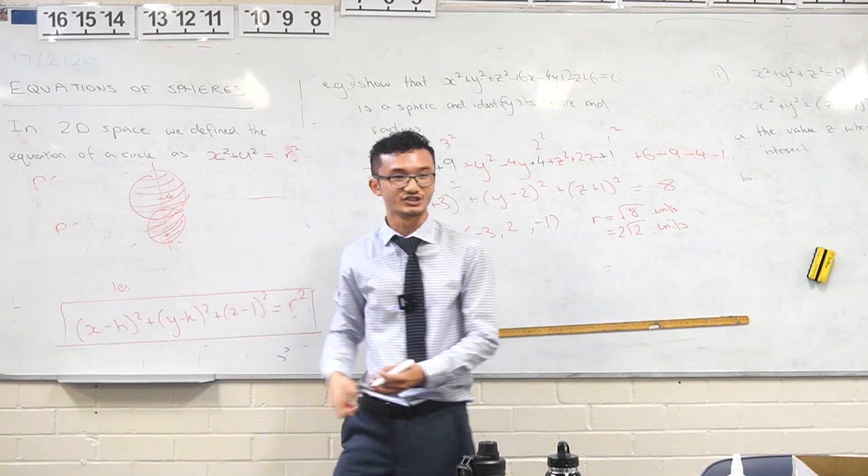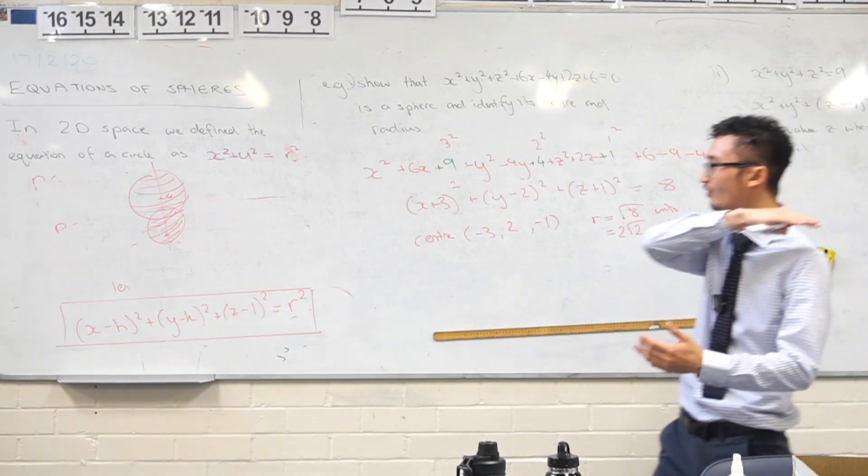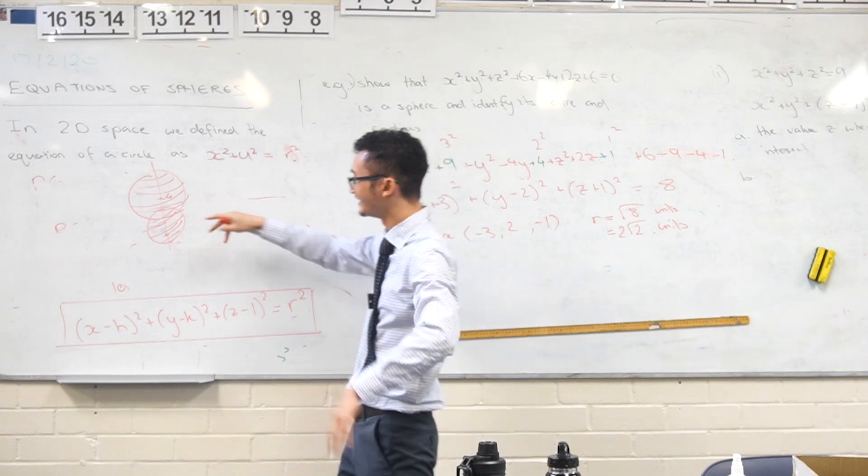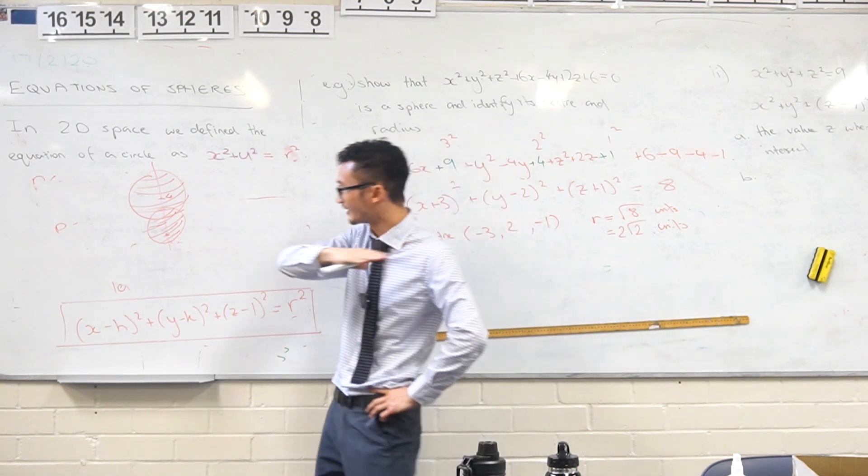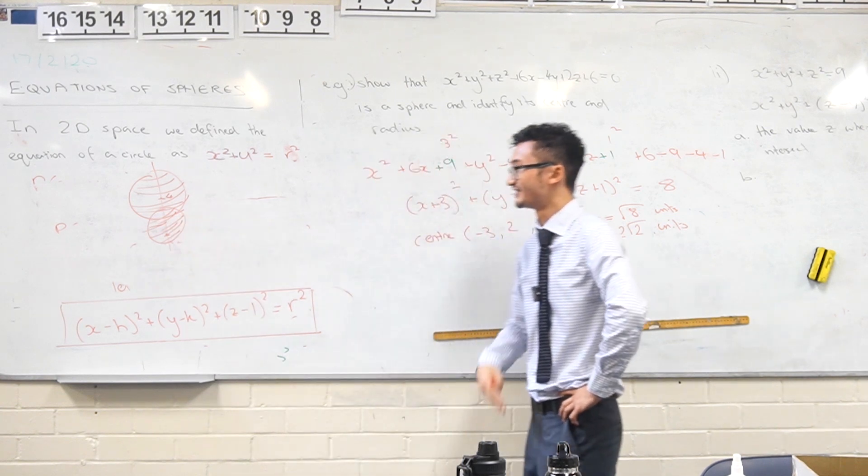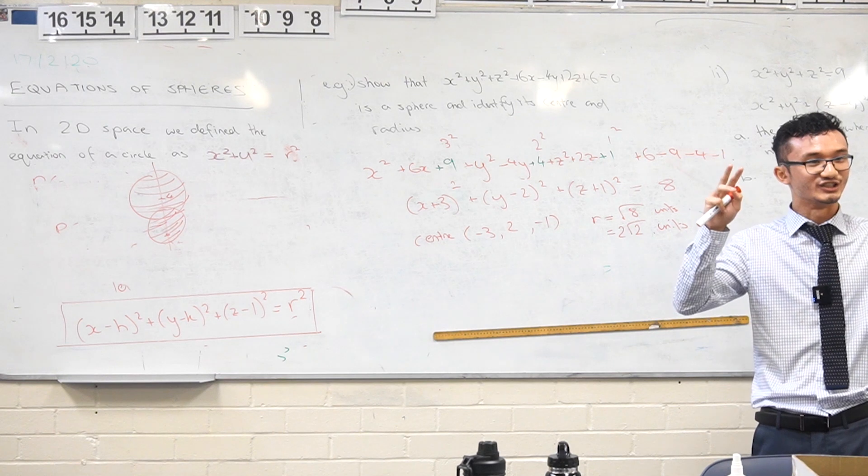That intersection is actually going to be what we call a plane. The intersection region is actually going to be a circle. You're cutting at some z value and you're left with a circle as the intersection region.